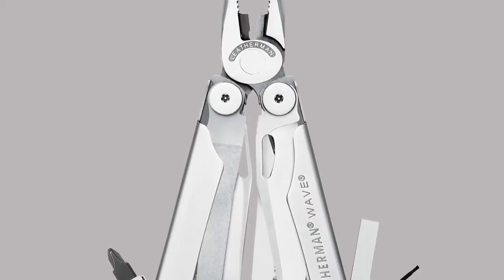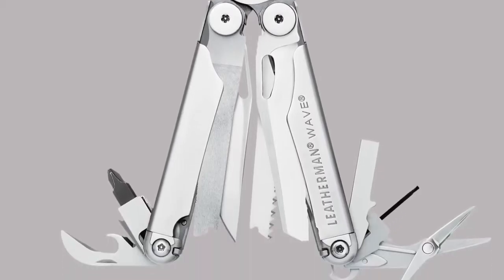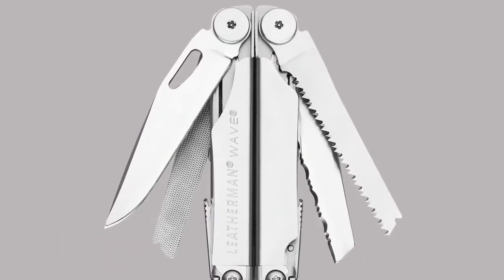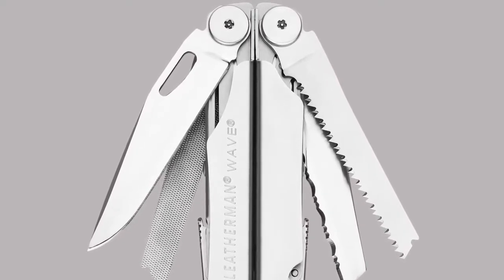The Wave is 100% stainless steel and has 17 features in all. The outside features include a knife, a saw, a serrated knife blade, a wood metal file, and a diamond coated file.